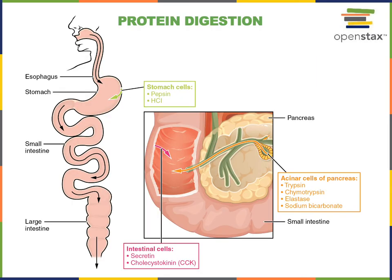The chemical digestion of protein is initiated in the stomach. Pepsin is the enzyme that initiates the hydrolysis of peptide bonds within polypeptides, producing shorter peptides.